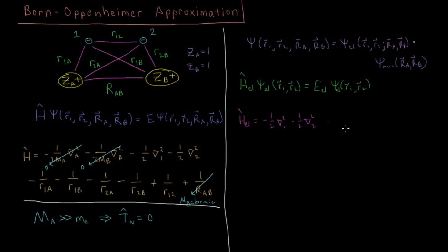Then we have the attraction of the electrons to the nuclei: −1/R_{1A}, −1/R_{1B}, −1/R_{2A}, and −1/R_{2B}. Remember, the charge of nucleus A and nucleus B is each 1 for the hydrogen molecule. If this weren't hydrogen, Z_A and Z_B would not be 1, and we would need to include their values in the numerator of these nuclear attraction terms.